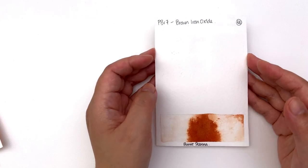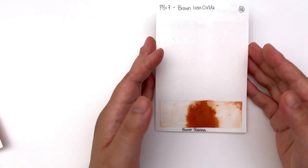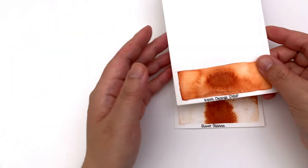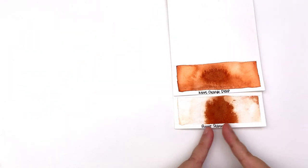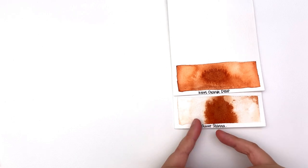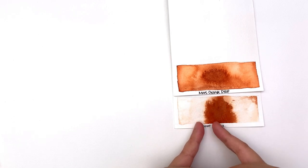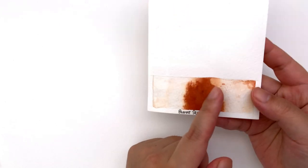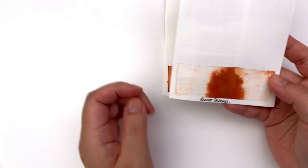It is made with PBR7 which is brown iron oxide and the dispersion, it's not as big as like the Mars orange deep. The halos aren't as strong. You get this mass tone in the middle. I actually see a lot more granulation in here and then just a little bit of halo on either side.